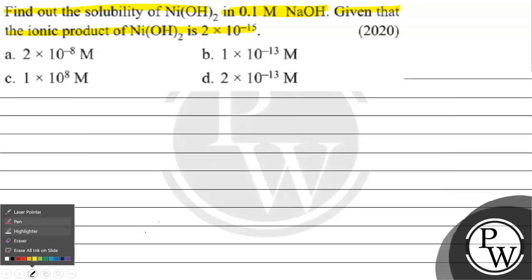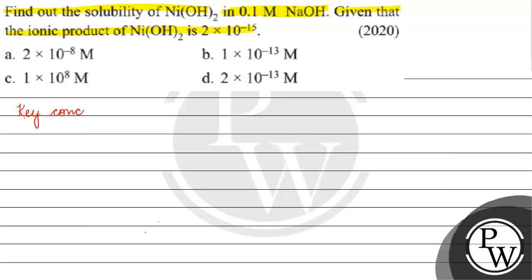The key concept for this question is solubility product. If we talk about the solubility product, we have nickel hydroxide. Nickel hydroxide dissociates into Ni²⁺ ion and two OH⁻ ions.